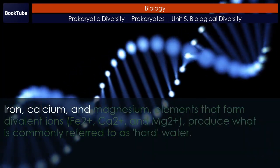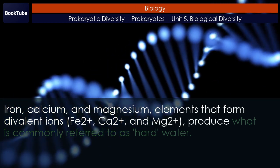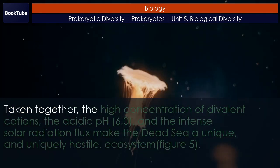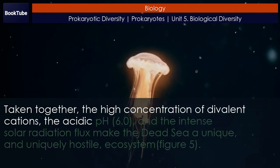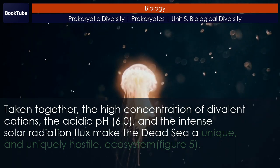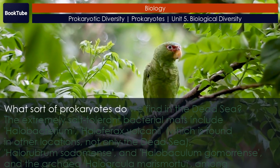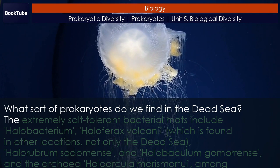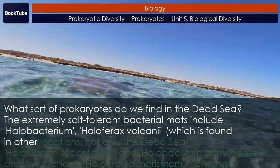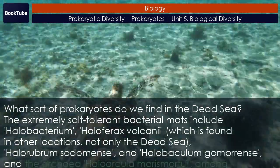Iron, calcium, and magnesium — elements that form divalent ions (Fe2+, Ca2+, and Mg2+) — produce what is commonly referred to as hard water. Taken together, the high concentration of divalent cations, the acidic pH of 6.0, and the intense solar radiation flux make the Dead Sea a unique and uniquely hostile ecosystem (Figure 5). The extremely salt-tolerant bacterial mats found there include Halobacterium, Halopherax vulcani, Halorubrum sodomens, and Halobaculum gomorans, and the Archaea Halorcula marismortui, among others.